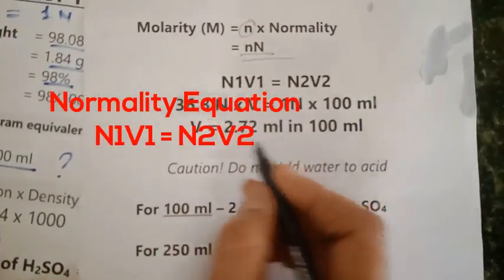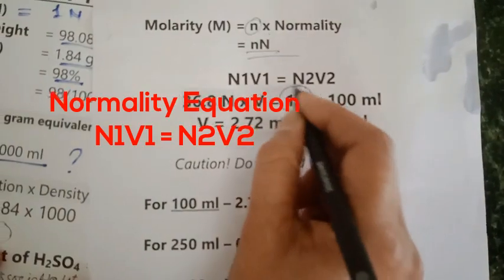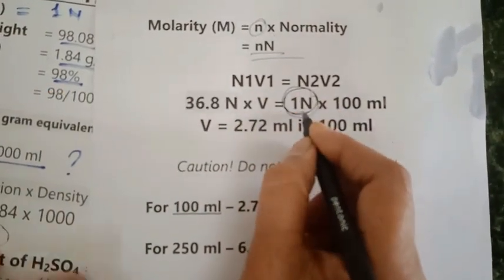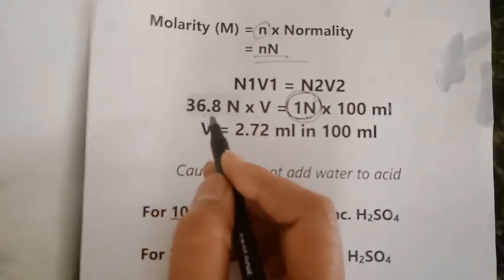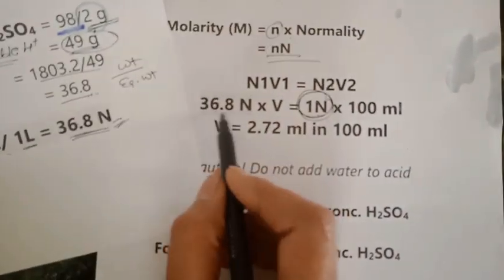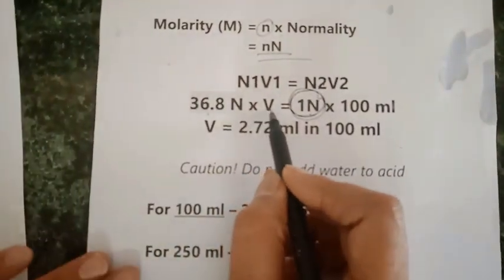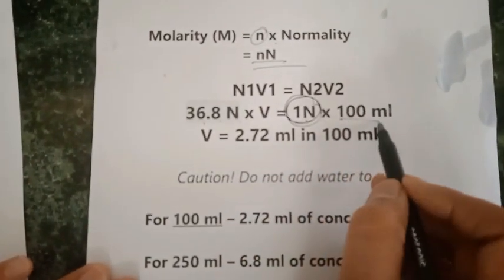N1V1 equals N2V2. For this purpose I want to prepare one normal solution in a 100 ml measuring flask.